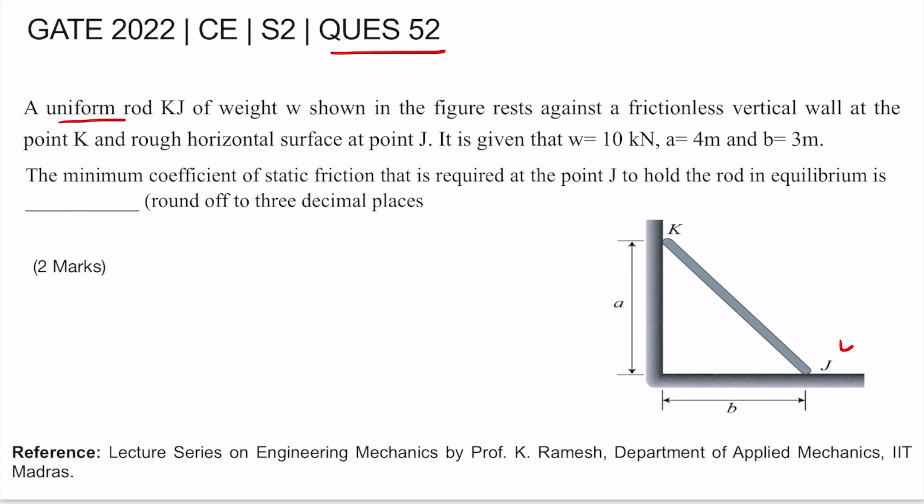A uniform rod KJ of weight W shown in the figure rests against a frictionless vertical wall at point K and rough horizontal surface at point J. It is given that W is 10 kN, A is 4 m, and B is 3 m.